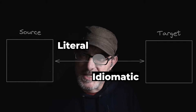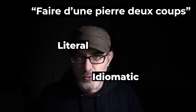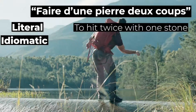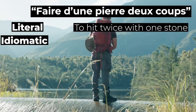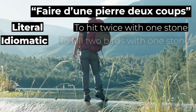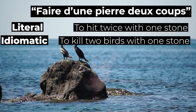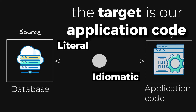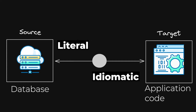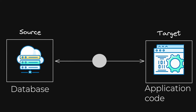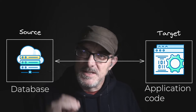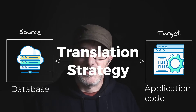For example, there's a French expression, faire d'une pierre deux coups. If you were to translate it literally, it would be to hit twice with one stone. But a more idiomatic expression in English is to kill two birds with one stone. From our perspective as developers, the source is the database and the target is our application code. Both Drizzle and Prisma simplify how your application interacts with the database — both translate data from one side to the other, but they use a different translation strategy.